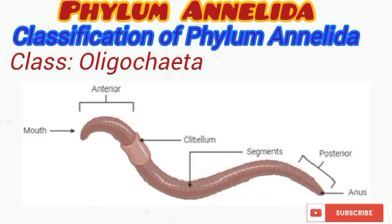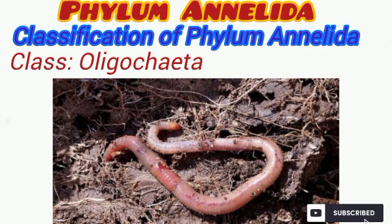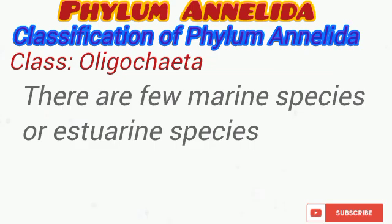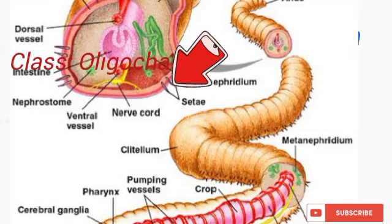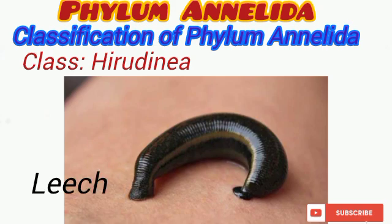The class Oligochaeta contains more than 3,000 species, of which the most common is the earthworm. The majority of oligochaetes inhabit either freshwater or terrestrial environments, though there are a few marine species. Oligochaetes possess a clitellum and setae but lack parapodia. Examples include the earthworm — scientifically termed Lumbricus terrestris — as well as Tubifex, Stylaria, and others.